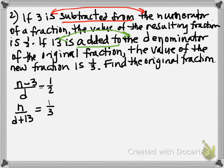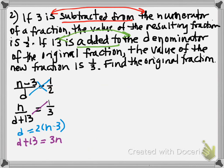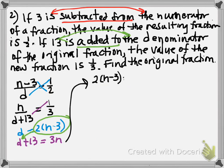We do cross products for both equations. For the first: d equals two times the quantity n minus three. For the second: d plus 13 equals three n. I recommend writing it this way first so you don't forget to multiply the negative three. Since we have a value for d, we'll use substitution. Substituting gives us two times the quantity n minus three plus 13 equals three n.